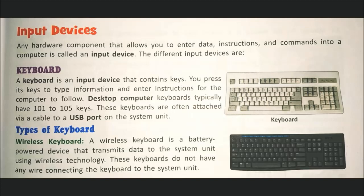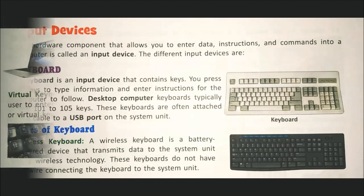Types of keyboard: there are four types of keyboards — wireless, compact, virtual, and braille. Wireless keyboard: a wireless keyboard is a battery-powered device that transmits data to the system unit using wireless technology. These keyboards do not have any wire connecting the keyboard to the system unit. Yani ki wireless keyboard jo hamein battery ke saath work karte hain aur data ko transmit karte hain computer mein. In mein koi bhi wires use nahi hoti hain; ye kisi bhi wire ke saath connected nahi hoti hain.